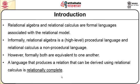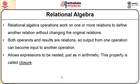As a general introduction, relational algebra and relational calculus are formal languages associated with the relational model. Informally, relational algebra is a high-level procedural language and relational calculus is a non-procedural language. However, formally both are equivalent to one another. A language that produces a relation that can be derived using relational calculus is relationally complete. Relational algebra operations work on one or more relations to define another relation without changing the original relations. Both the operands and the results are relations, so output from one operation can become input to another. It allows expressions to be nested just as in arithmetic, and this property is called the closure property.